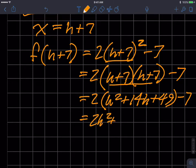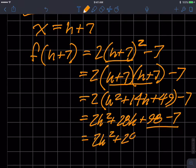So 2h squared plus 28h plus 98 minus 7. And then combining like terms, 2h squared plus 28h plus 91 is what f of h plus 7 is equal to.